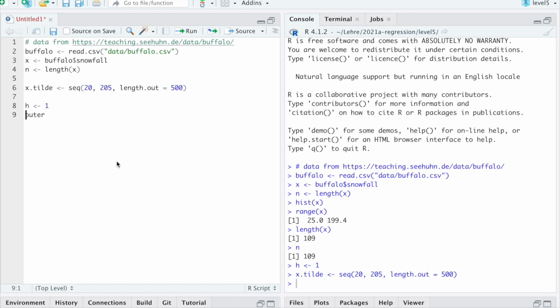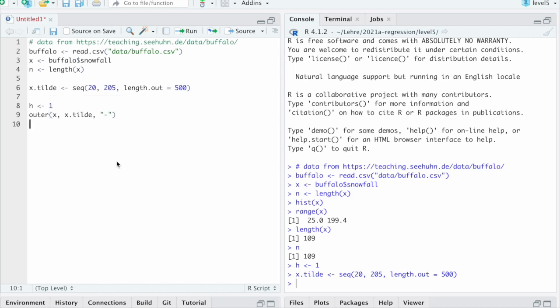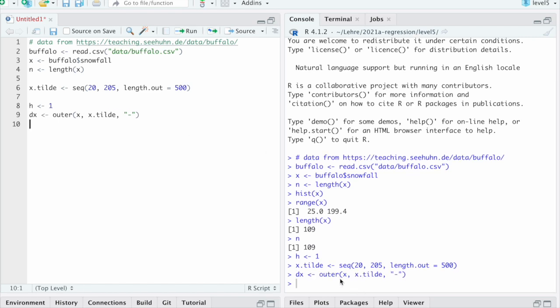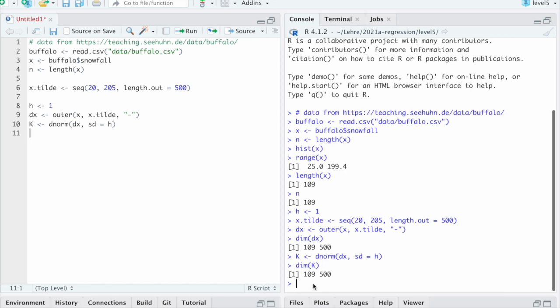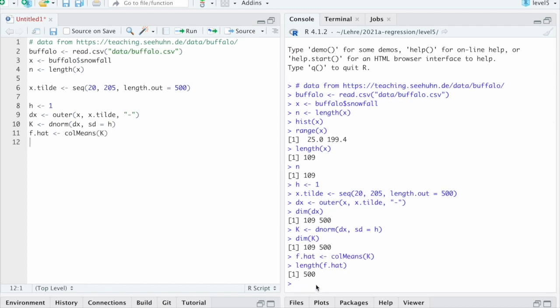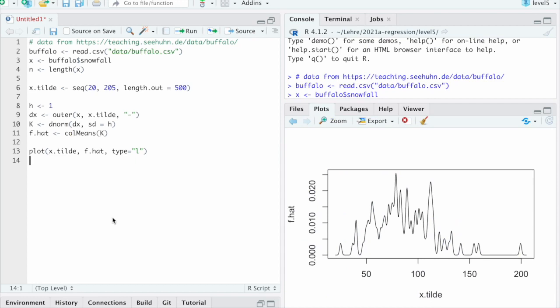So first let's just fix the bandwidth and compute the kernel density estimate the way we just said we would do it. So let's say h is 1. We need a grid. So let's do x tilde is, I don't know, maybe from 20 up to 205. Then we have a bit of gap through the sides. And let's, I don't know, take 500 steps. And now we can do it. We can do outer x, x tilde. That's what I said. And the function we are applying is subtraction. And that, let's just call it dx. That will be a matrix which has 109 rows. That is n. And 500 columns. It's 500 because we chose 500 grid points. And then the matrix k I said would be d_norm applied to dx. And standard deviation is meant to be h. So let's do that. And k should have the same size. That worked. 109 by 500. And then f hat is colmeans of k we said. That should give us a vector of length 500. Here we go. And we can now plot this. And that should look similar to the histogram. So plot x tilde is the x values to go with it. And f hat is our y values. And let's do a line plot. So that works.